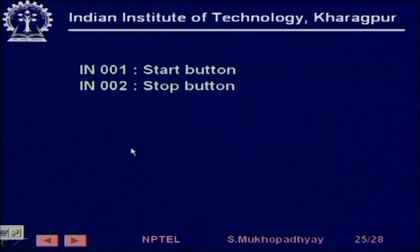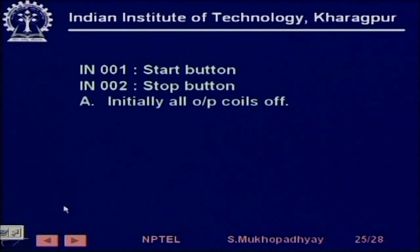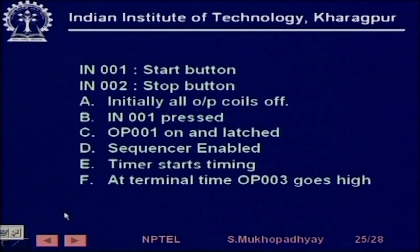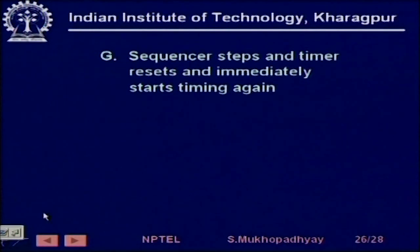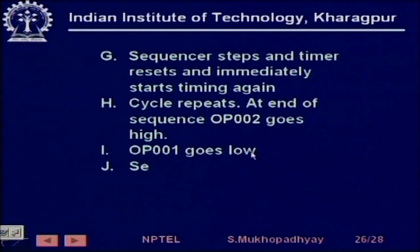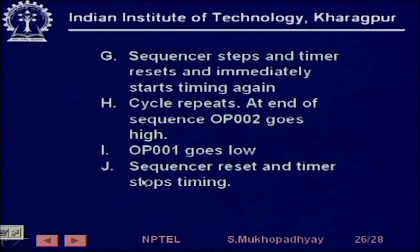To summarize: IN001 is a start button, IN002 is a stop button. Initially all output coils are off. When IN001 is pressed, output 001 goes on and is latched, then the sequencer is enabled and the timer starts timing. At terminal time, output 003 goes high, the sequencer steps, and the timer resets and immediately starts timing again. This cycle repeats. At the end of the sequence, OP002 goes high, OP001 goes low, and the sequencer resets and the timer stops timing.